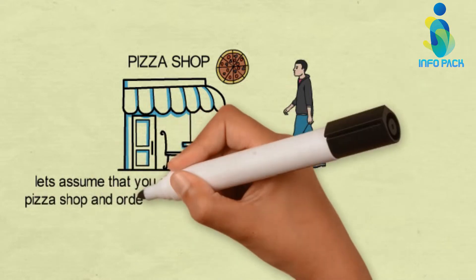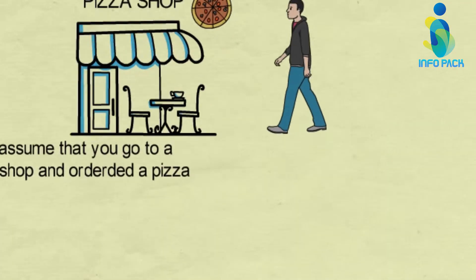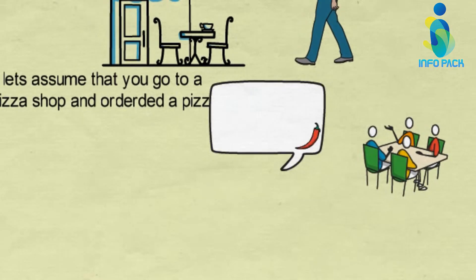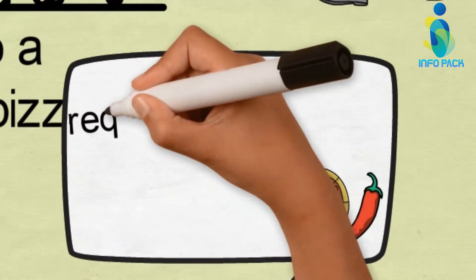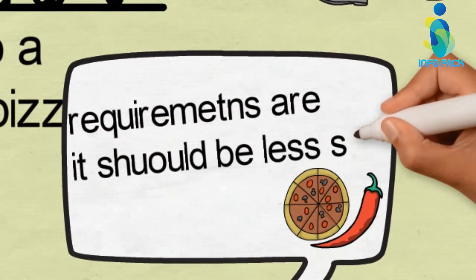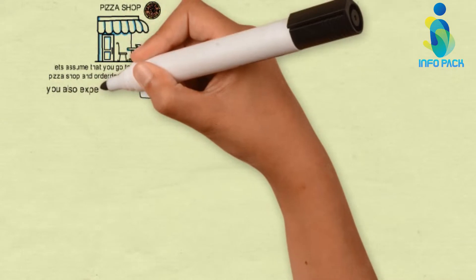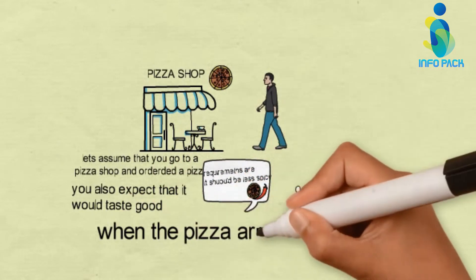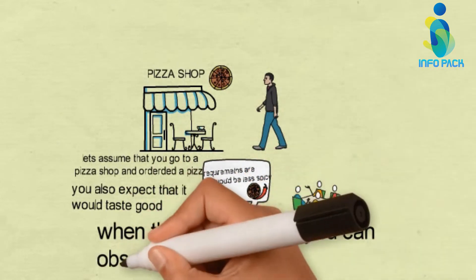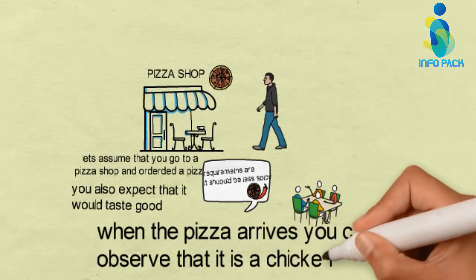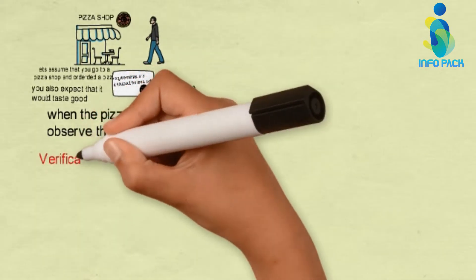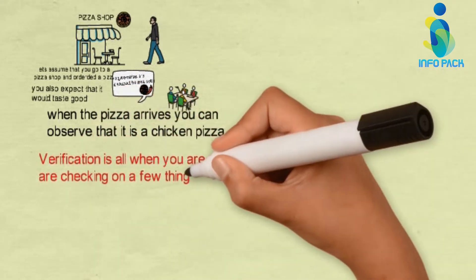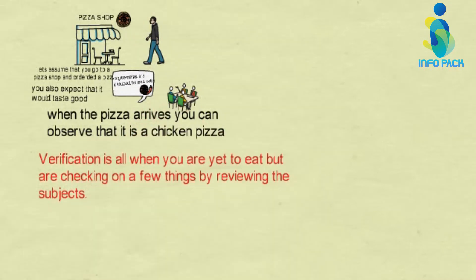Let's assume you are going to a pizza shop. Everyone has different requirements — some like spicy, some do not. Our requirement is that the pizza should be less spicy and have a great taste. When the pizza arrives, you first observe whether it is a chicken pizza or not, since that's what you ordered. This checking before eating represents verification — you are reviewing and checking a few things.